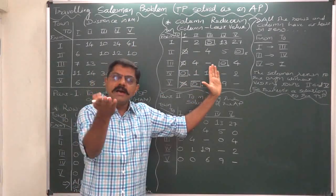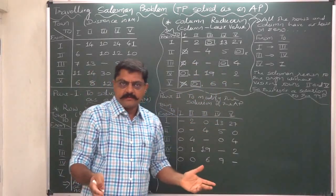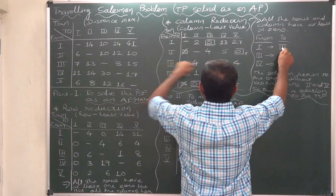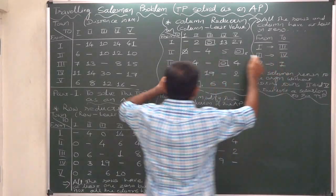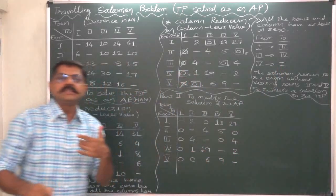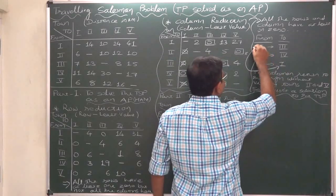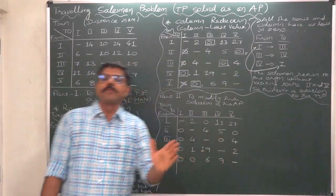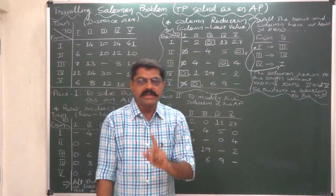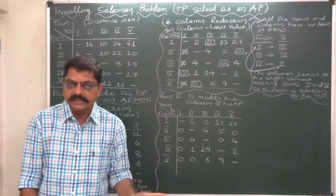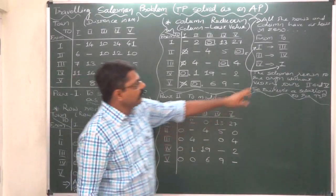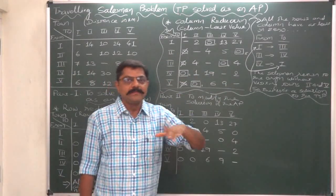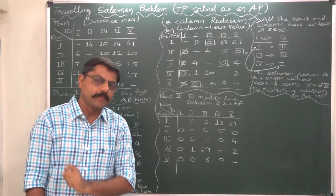Let's check this solution for our Traveling Salesman Problem. From town one the salesman goes to town three, from town three the salesman goes to town four, but from town four the salesman returns to the origin town one — without visiting town two or five. This is the case of a broken journey. It is mandatory for the salesman to return to the origin only after visiting all other centers once. So the optimal solution of the assignment problem is not the solution of our Traveling Salesman Problem.